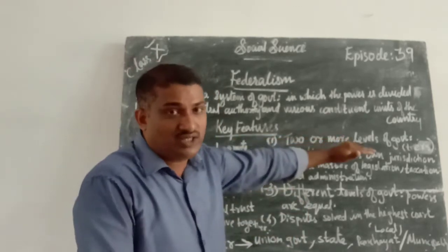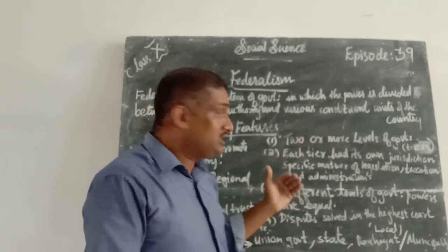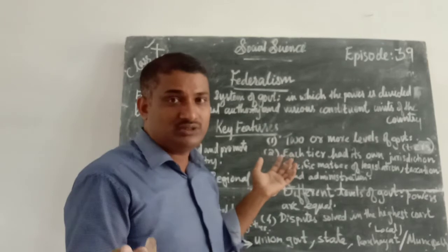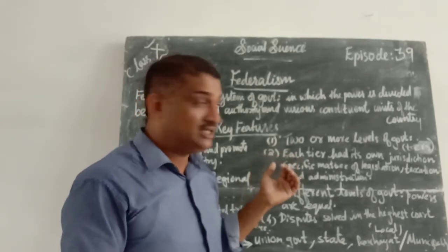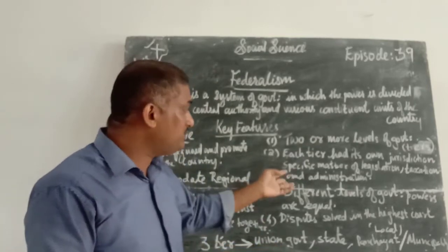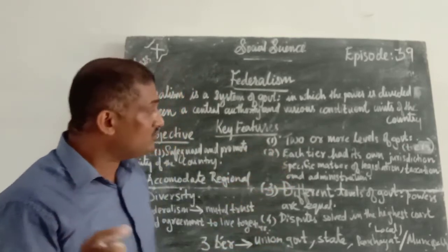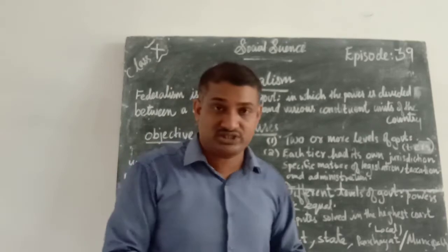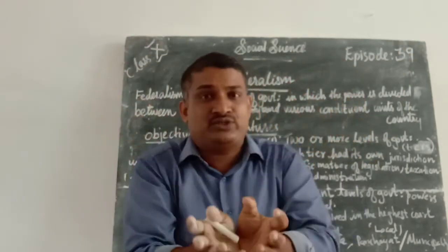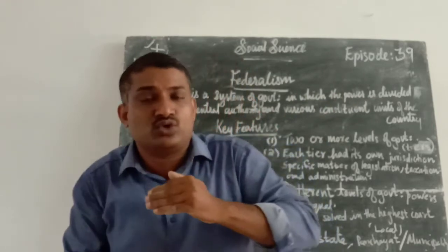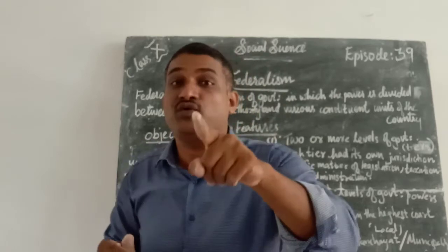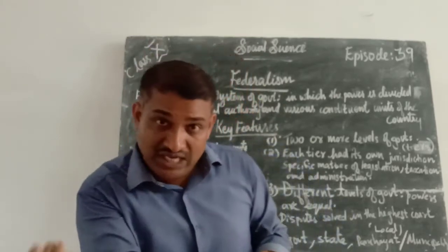There are two or more levels of government — these are federalism. In India, three tiers exist. Each tier has its own jurisdiction in a specific manner of legislation, taxation and administration. These three tiers join together to run the government in a proper and better manner for the benefit and welfare of the people.